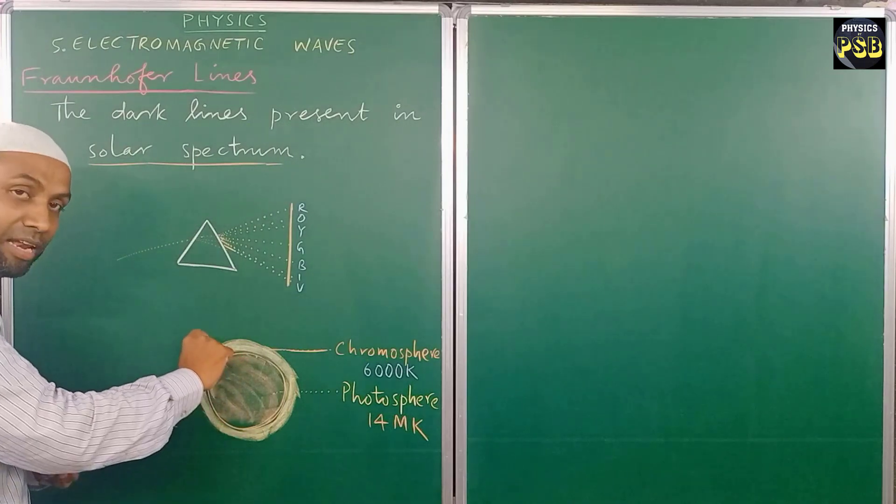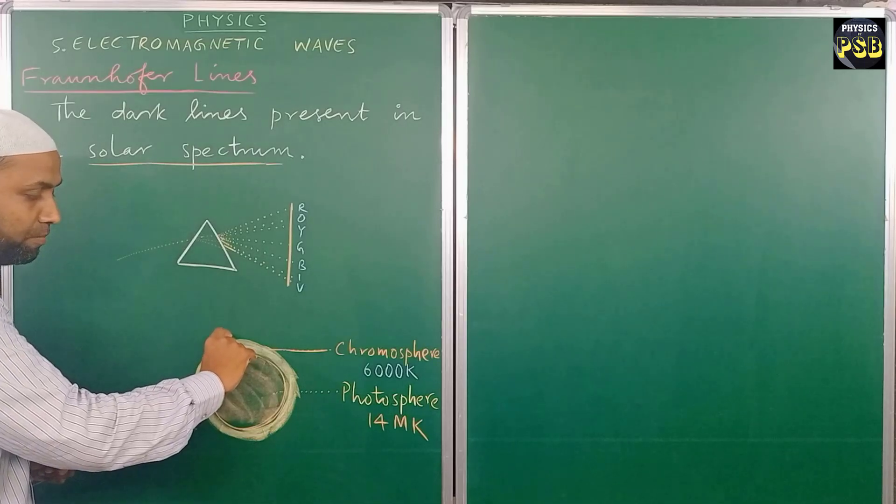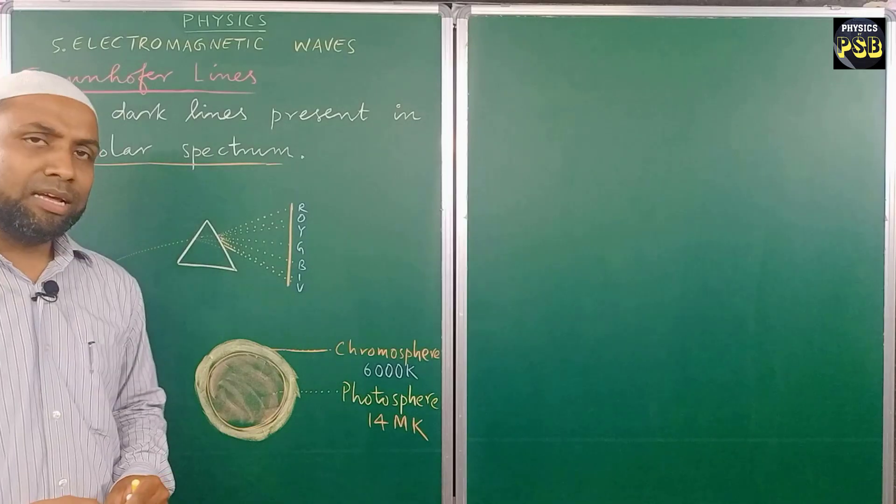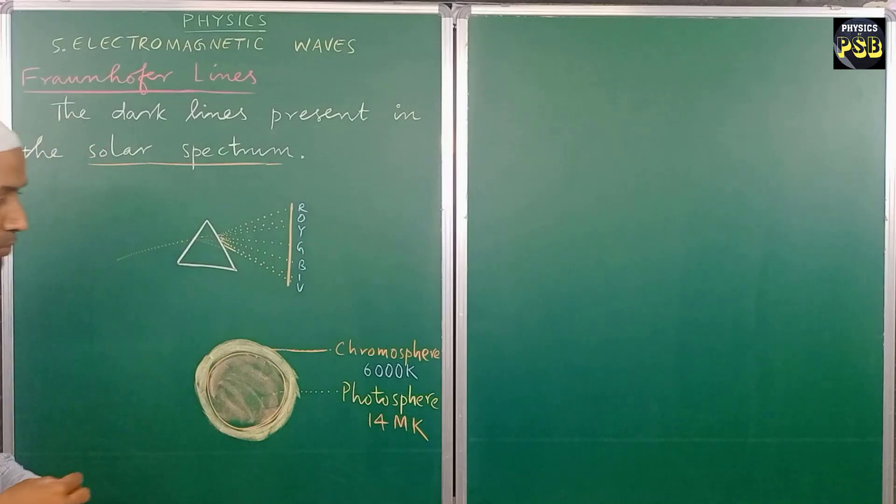What does the chromosphere consist of? Chromosphere consists of different elements in gaseous form. Whatever element is present in the sun, its gas is present in the chromosphere.